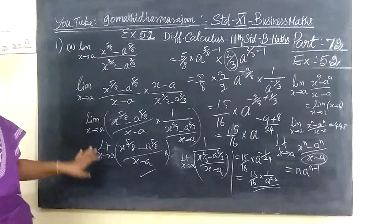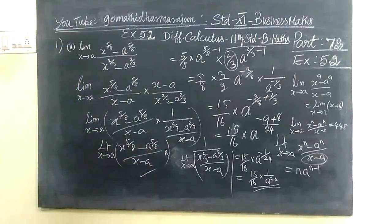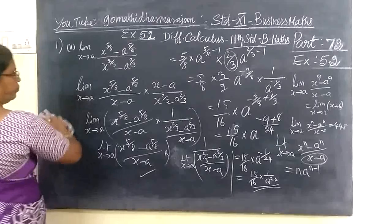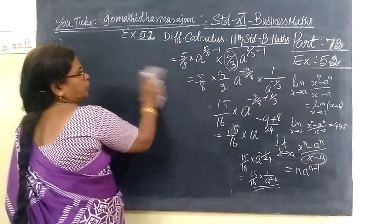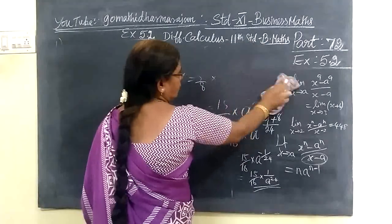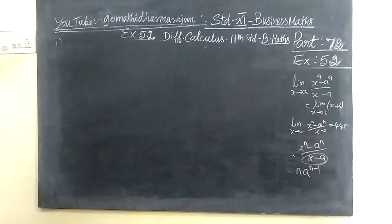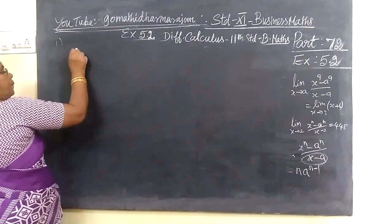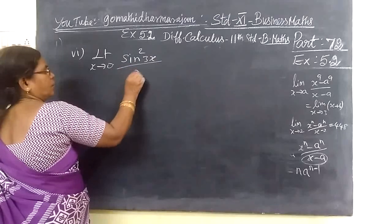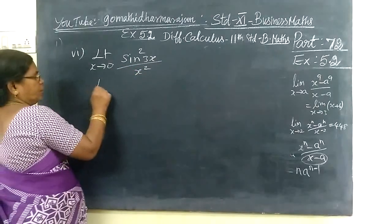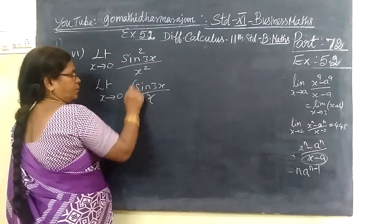That's it: 15 by 15, 8 over, minus 1 by 24, minus 9 over, 1 by 8 over 24. Hope you understand. Limit over. And we do one more problem. Now we have limit x tends to 0, sin 3x divided by x, the whole square.